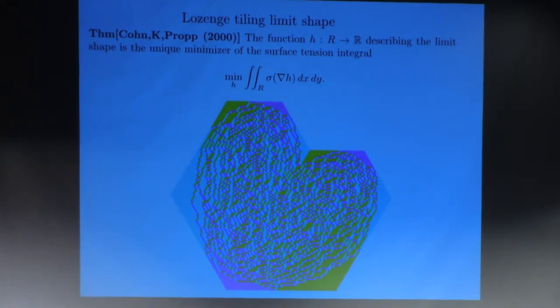Right? So the function H describing the limit shape for a given lozenge tiling of a region like this is the unique minimizer of this so-called surface tension integral. You integrate over the region and over the plane, R, surface tension, which is now a function of the gradient of H. Gradient, think of gradient of H as S, T. All right, that's what I've been calling these S and T variables. They're the densities of, I forgot what colors I used, blue and green tiles. And one minus S minus T, that's the density of the red tile.